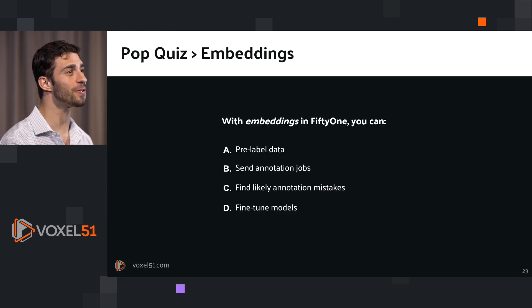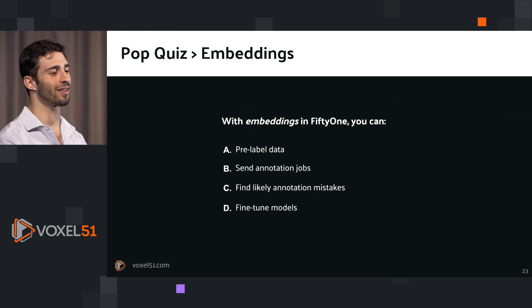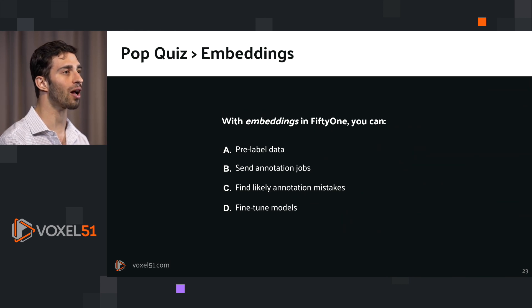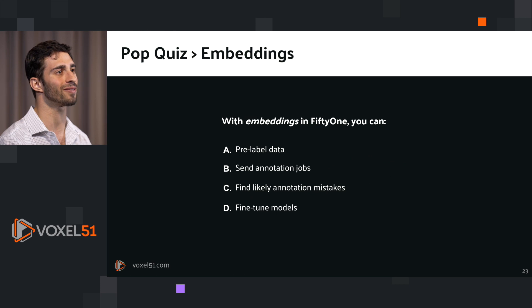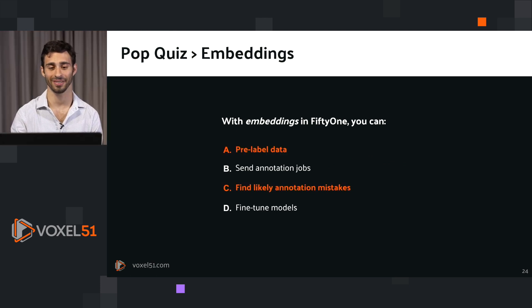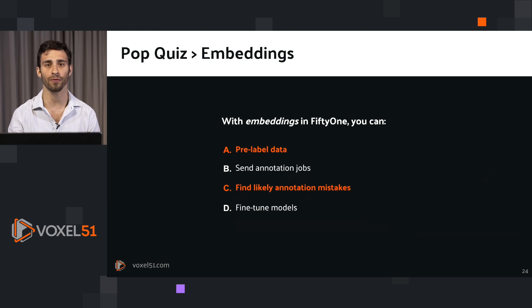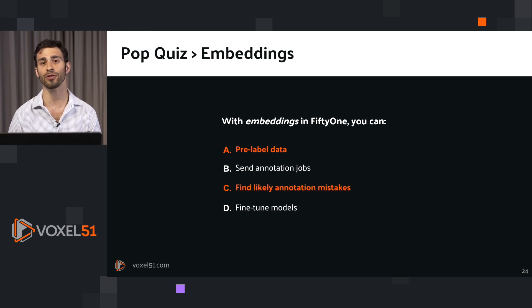Let's take a quick pop quiz. With embeddings in FiftyOne, which of the following can you do? A) Pre-label data, B) Send annotation jobs, C) Find likely annotation mistakes, or D) Fine-tune models? The answer is A and C. With embeddings, FiftyOne can uncover hidden structure and use that rough clustering to pre-label data or find potential mistakes, as we saw in the Berkeley Deep Drive example. FiftyOne does integrate with annotation tools and fine-tuning pipelines, but embeddings are used explicitly for pre-labeling and finding likely annotation mistakes.